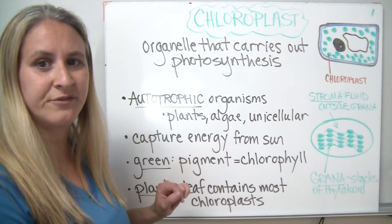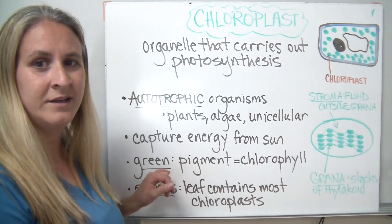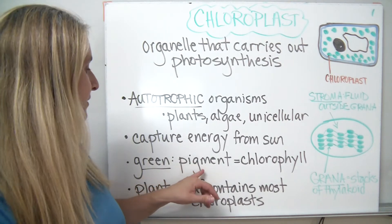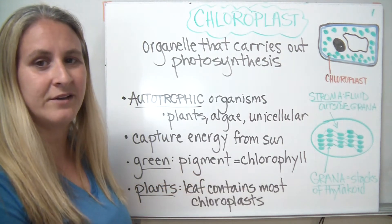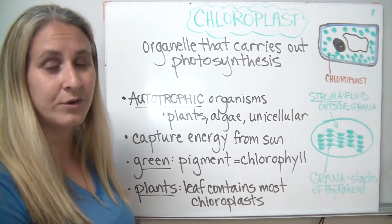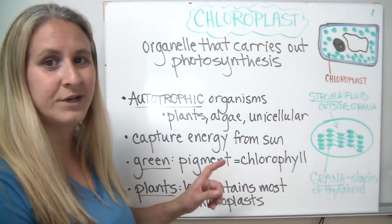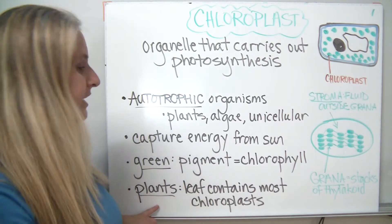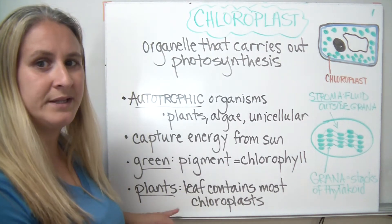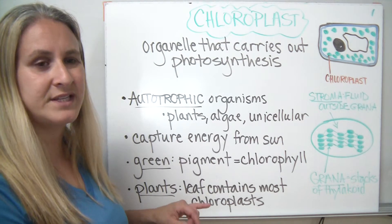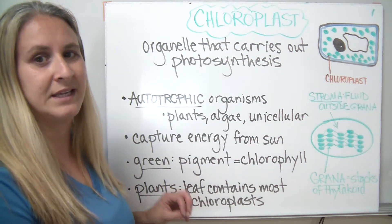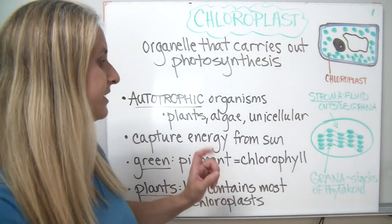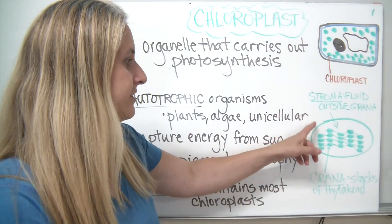Chloroplasts help to capture energy from the sun. They're green, and the reason why they're green is because they have a pigment inside of them called chlorophyll. We'll get into that in more detail later on. In terms of plants, the leaf contains most of the chloroplasts in the plant itself. We'll get into detail on that as well.